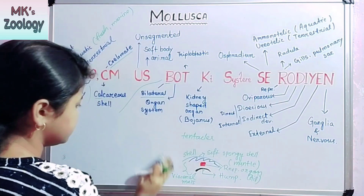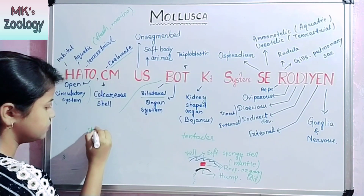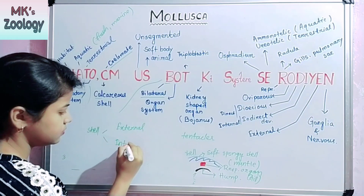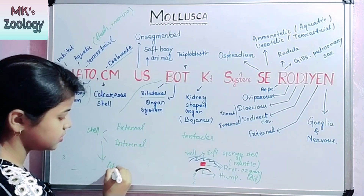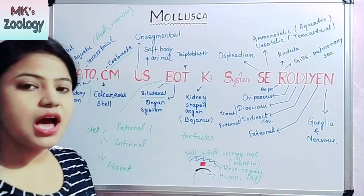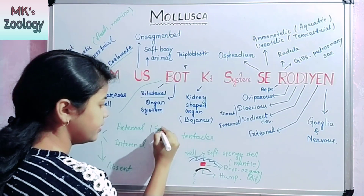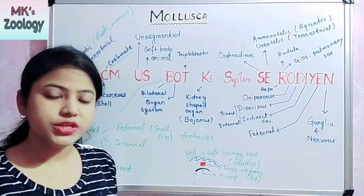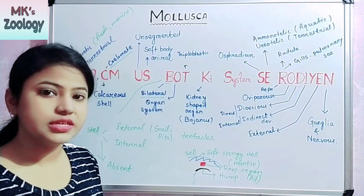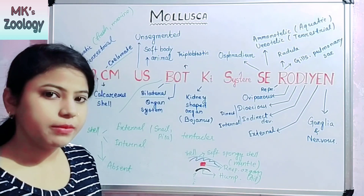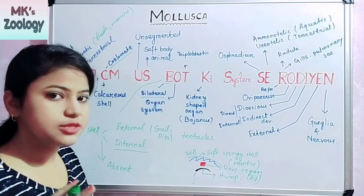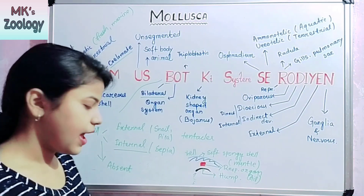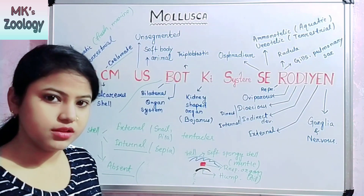The shell is of three types: external, internal, or absent in some animals. An external shell is hard-type and is present in snail and Pila. Internal shell is present in Sepia. And the shell is absent in Octopus.